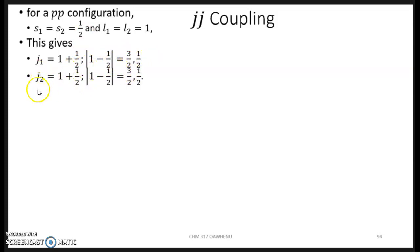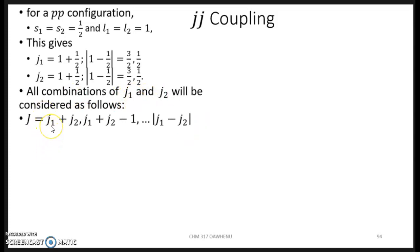Now to obtain our J, we consider all combinations of J1 and J2. So J can take values of J1 plus J2 up to the magnitude of J1 minus J2. It cannot have negative values. So this is 3 halves plus 3 halves up to 3 halves minus 3 halves, which is 3, 2, 1, 0.